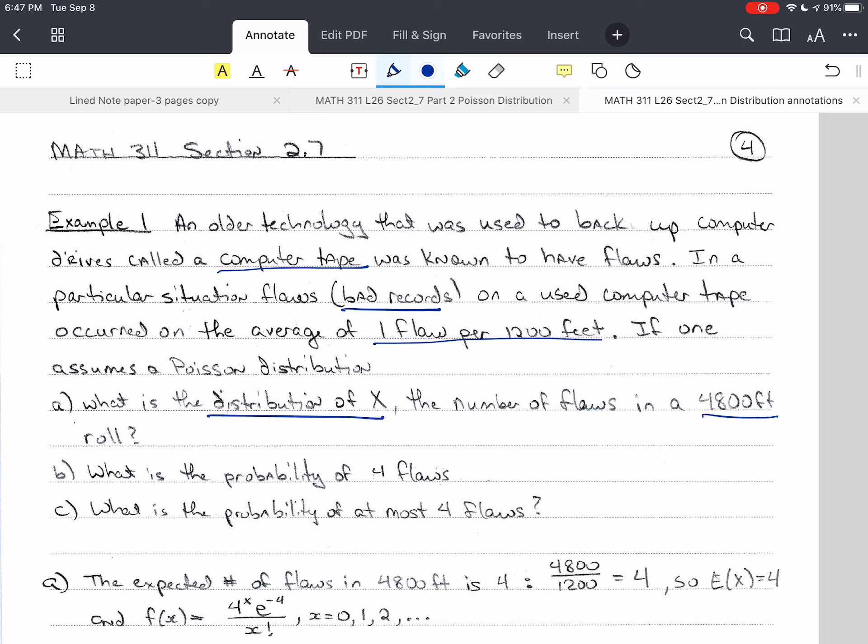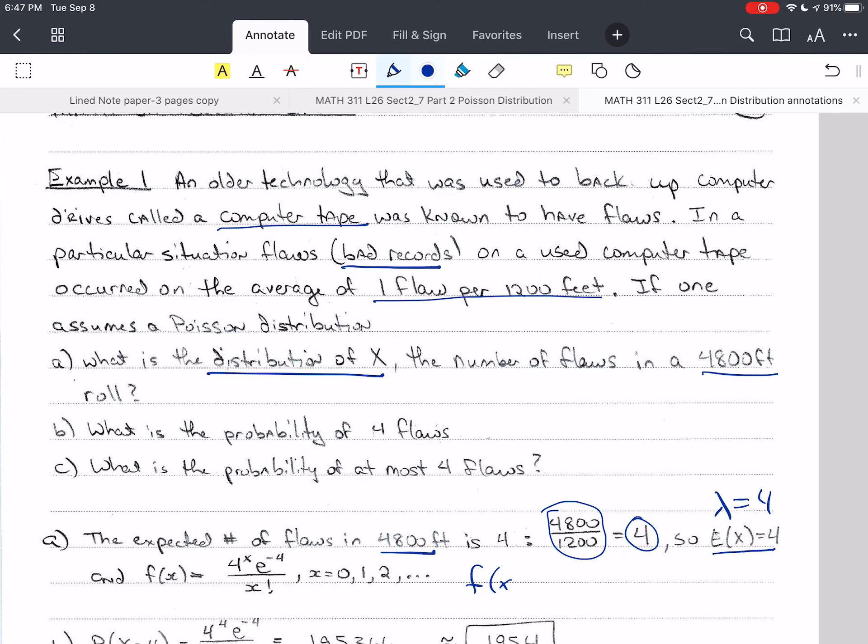So we want to know the distribution of X, which is the number of flaws in a 4,800-foot roll. So let's do that problem right now. That's part A. The expected number of flaws in 4,800 feet: we take 4,800 and divide by 1,200, and we get 4. And so E of X is 4. That means lambda equals 4. We take and we enter the PMF, and we substitute for lambda. We substitute 4. And so we end up with this as our PMF here.